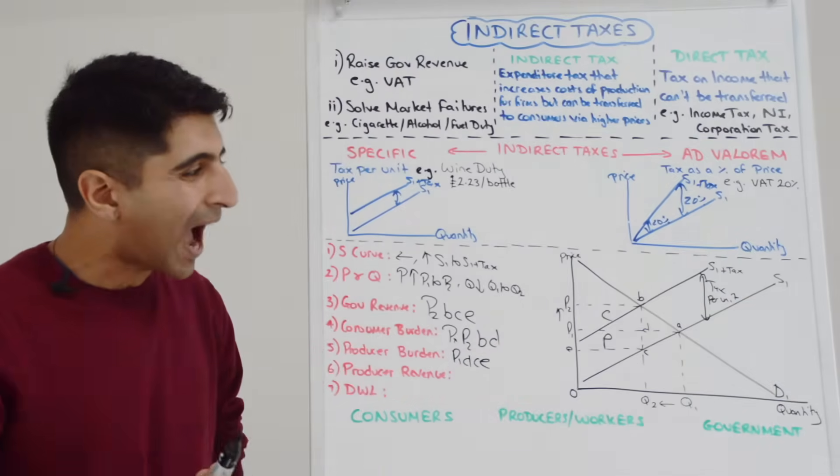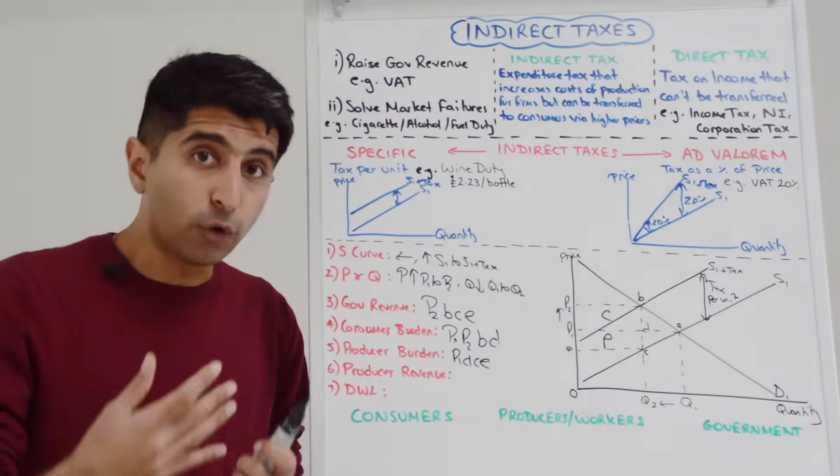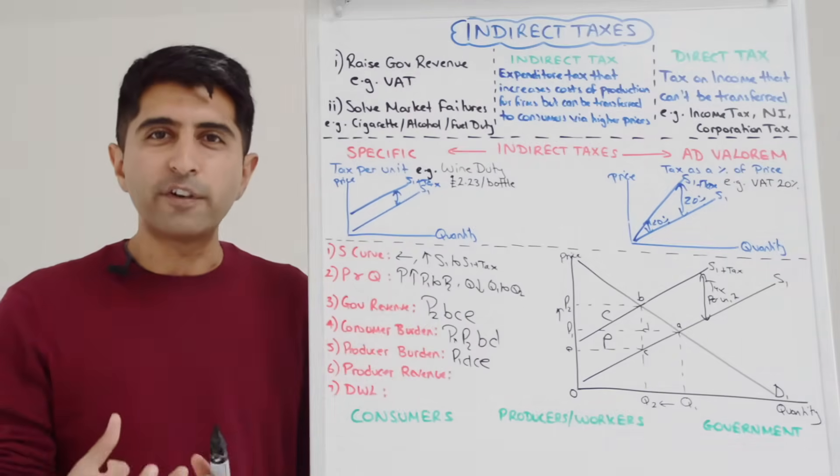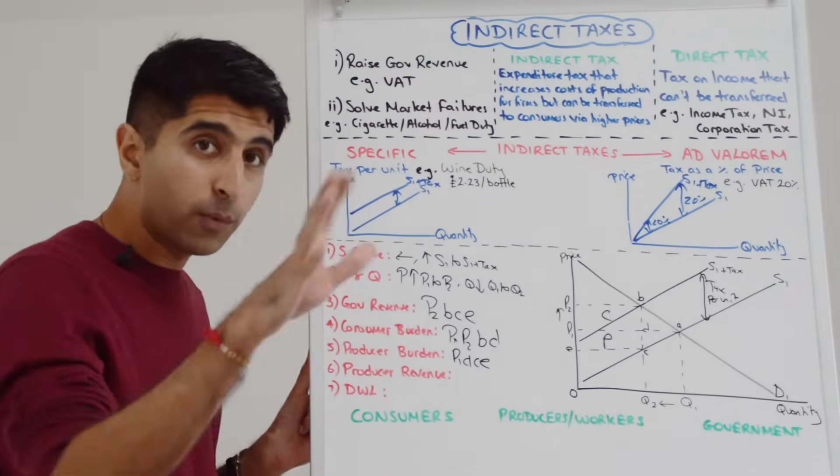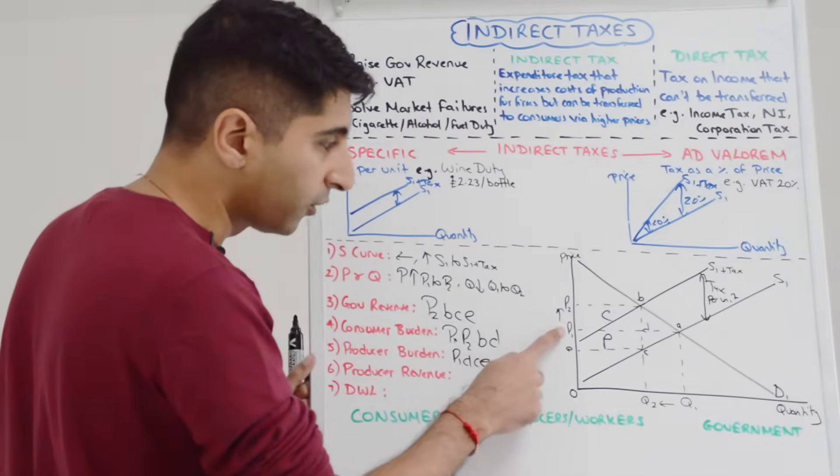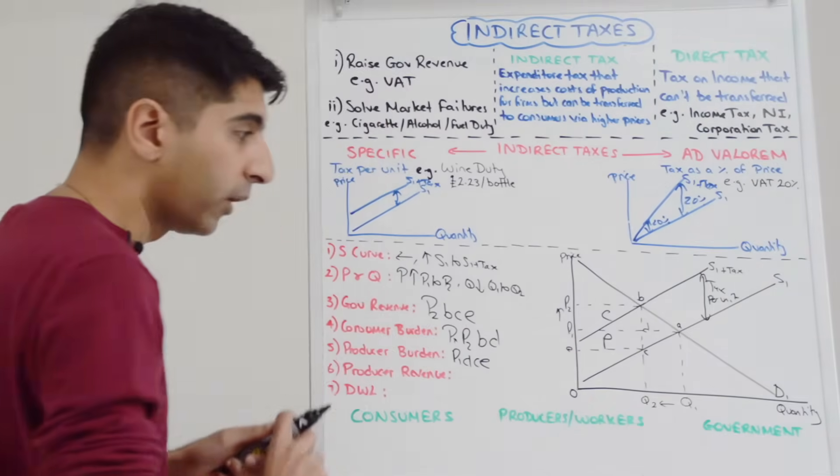Superb, so we can see how much of the tax is falling on consumers and on producers. We can also work out producer revenue. Remember the equation for revenue is just price times quantity. So hopefully you can see that initially without the indirect tax, producer revenue is just P1 times Q1, giving us the area P1AQ10.